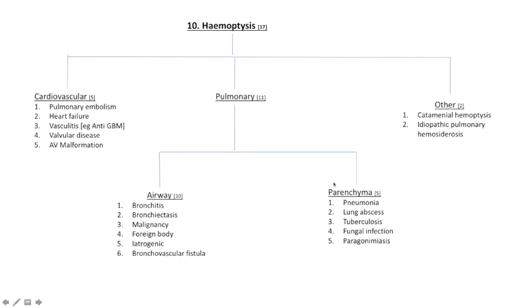Parenchymal causes in the lung include pneumonia, lung abscess, TB, fungal infection, and paragonimiasis.